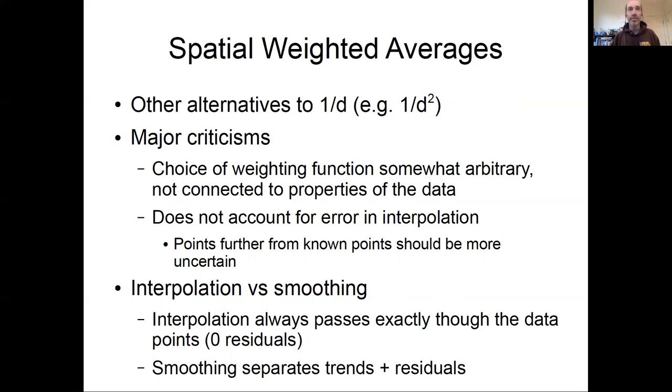Some of the negatives about inverse distance weighting approaches is this choice of weighting function seems somewhat arbitrary and not necessarily connected to the properties of the data. Nothing about the spatial scales of correlation is used in this approach—it's just one over d-squared or one over d or one over d to the q. There's just some weight that's applied, so you're not using information about the structure in the data to choose the weighting. It also has no way of accounting for any sort of errors in interpolation.